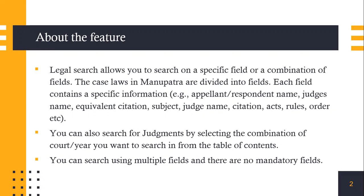You can also search judgments on legal search by party name by using the TOC — that is, the table of contents — as a feature, selecting which code or which timeline you want from there. Also, while using legal search there are no mandatory fields of information that you need to enter, and you can use multiple fields as per the information that you already have.